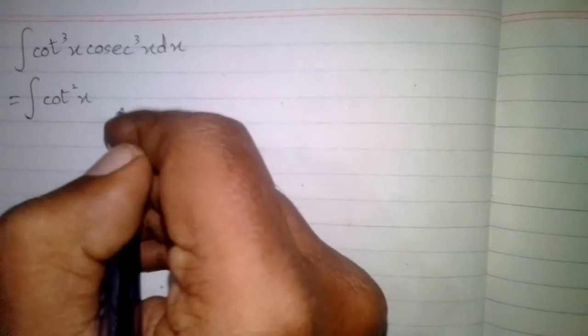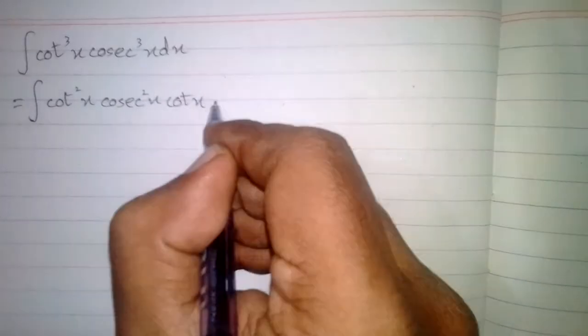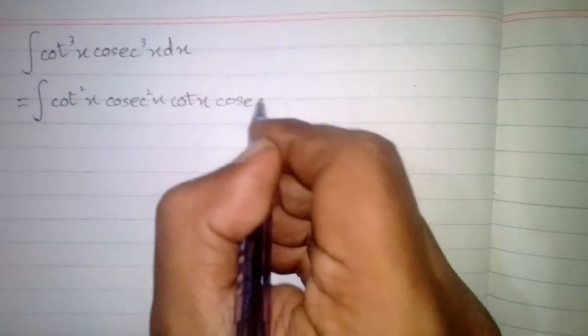In this video we will find the integral of cot cube x cosec cube x. First of all we can write cot cube x as cot square x multiplied by cot x, and cosec cube x as cosec square x multiplied by cosec x.